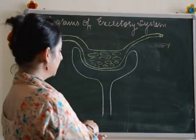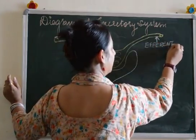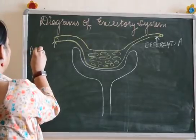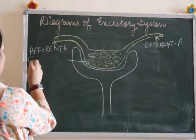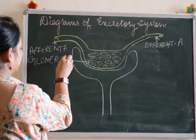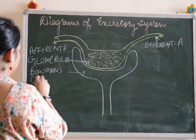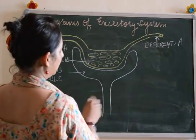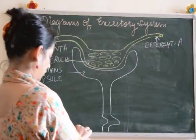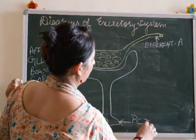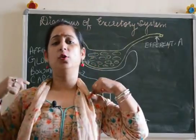Now for the labeling part: the efferent arteriole, the afferent arteriole, then this tubular part — the glomerulus — and then this cup-shaped structure is Bowman's capsule. We can also label this part — we can start making a coil structure here which is the PCT (proximal convoluted tubule); this is optional if you want to. This completes the structure of a Malpighian capsule — a very easy, full-scoring three-mark diagram, so you can easily draw the structure.